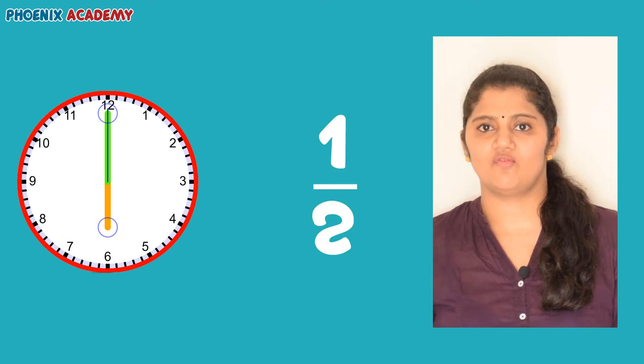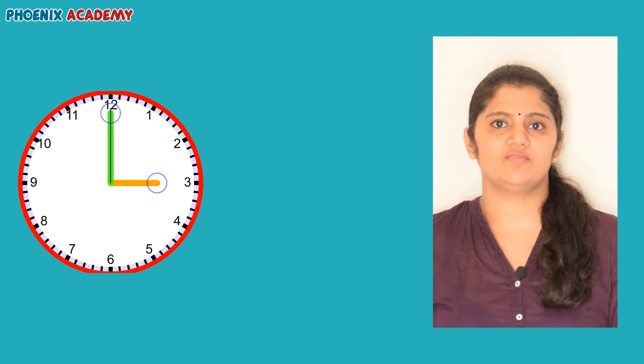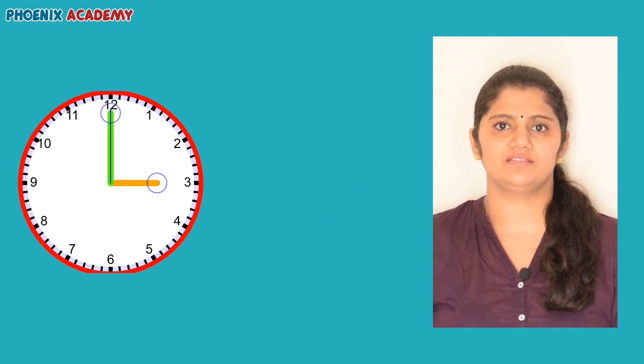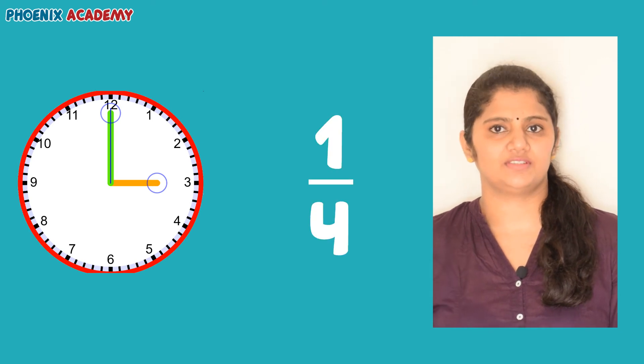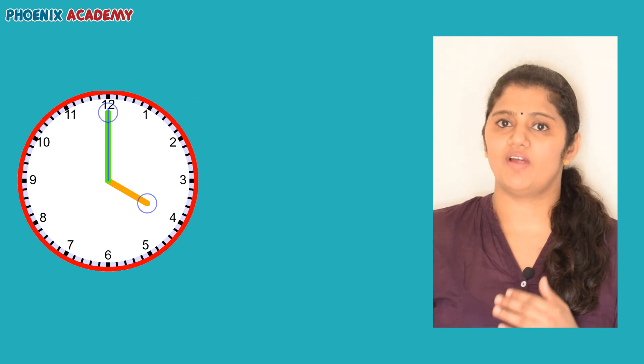Now let's see what fractions are covered by the clock when the time is at six o'clock. Yes, it is at one half. When the time is at three o'clock, what fraction is used here? Yes, it is one fourth or a quarter. When the time is at four o'clock, we have used one third.